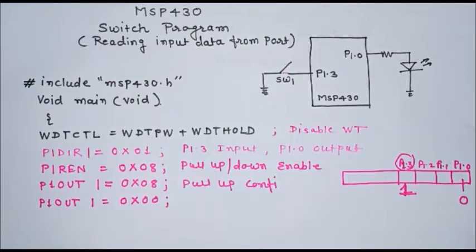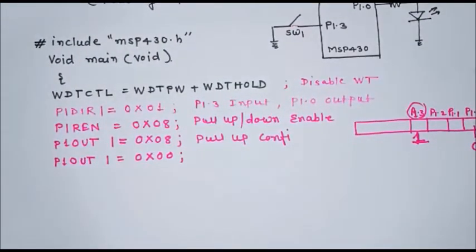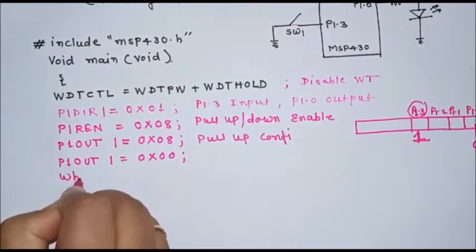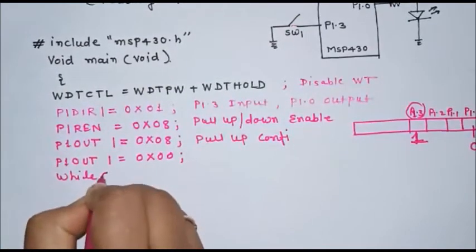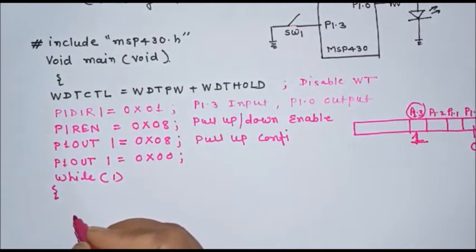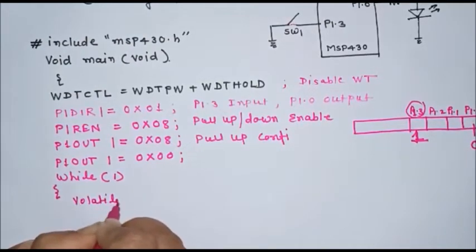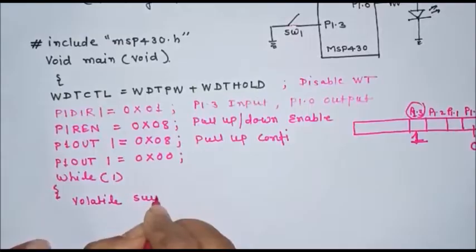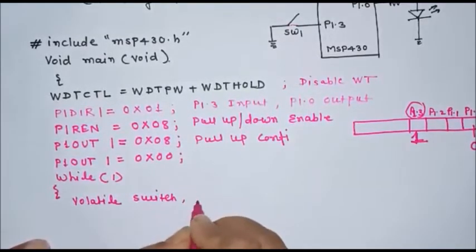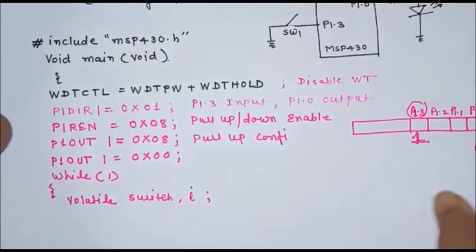Now we will write the program in a while(1) loop because we continuously want to check the status of the port pin. We will declare volatile variables: one named 'sw' to store the switch position, and another variable 'i' which will be used for generating a delay.